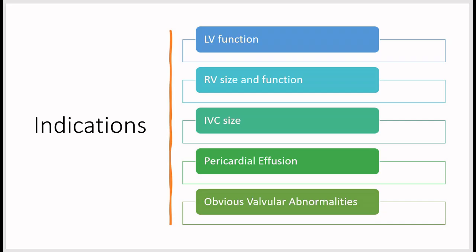Indications for doing a POCUS for cardiac include assessing LV function, looking at RV size and function, looking at IVC size to assess volume status, determining if there's any pericardial effusion and the size of it, and looking for obvious valvular abnormalities.